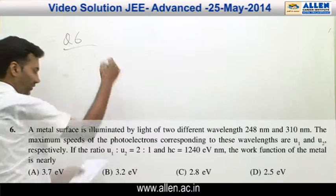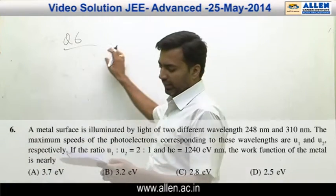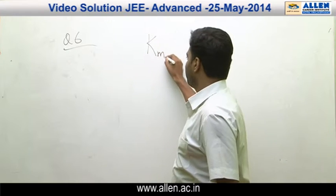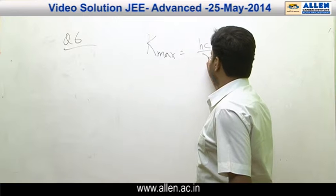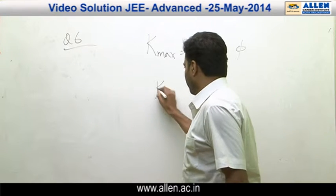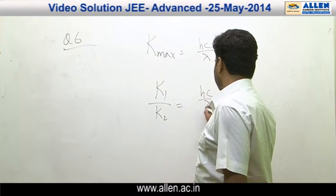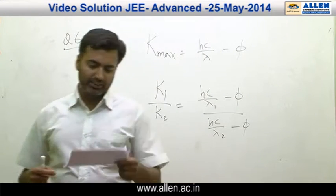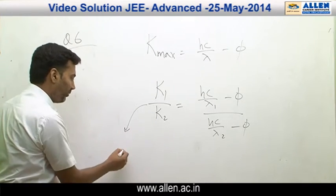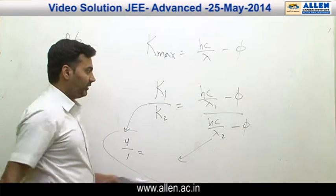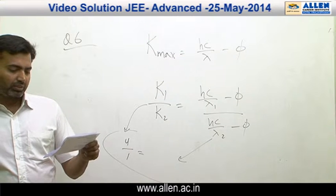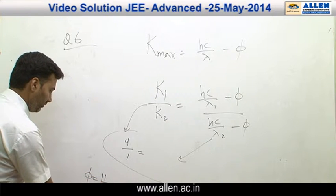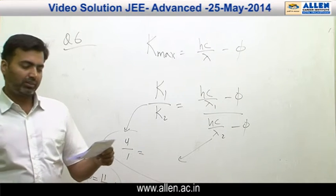Question number 6 is on the photoelectric equation. They have given the ratio of speeds and asked you to find the work function. Using KE_max equals hc/lambda minus phi, and taking the ratio of the two data sets, the ratio of speeds is 2:1, giving the ratio of K1 to K2 as 4:1. With lambda1 and lambda2 given, solving the equations gives phi as approximately 3.7 eV. Hence the answer is option number B.